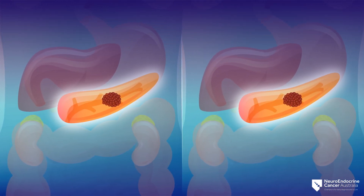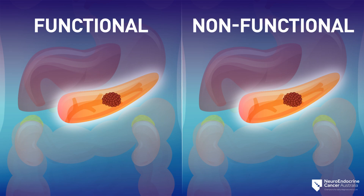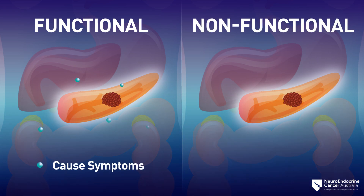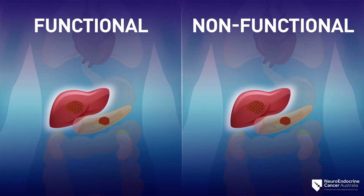NETs are classified as functional or non-functional. Functional tumours make too much of a certain hormone and cause symptoms. Non-functional tumours may make hormones but don't cause any symptoms. NETs can be slow-growing or aggressive. Unlike other cancers, both slow-growing and fast-growing tumours can spread to other parts of the body.